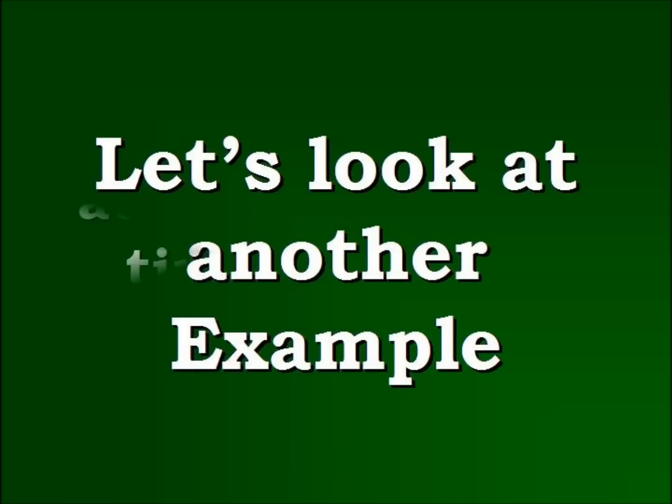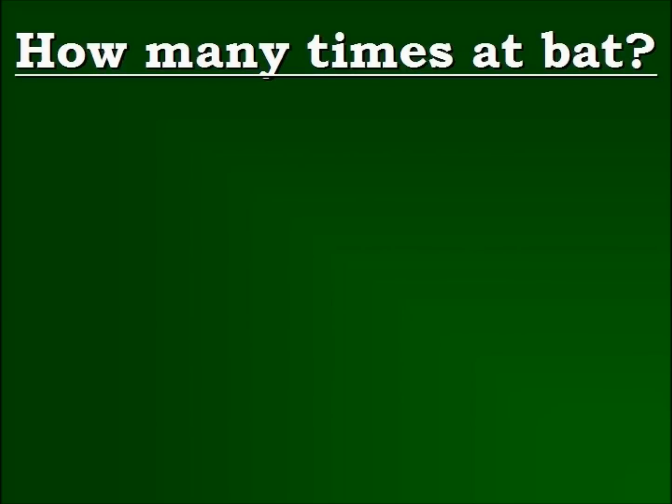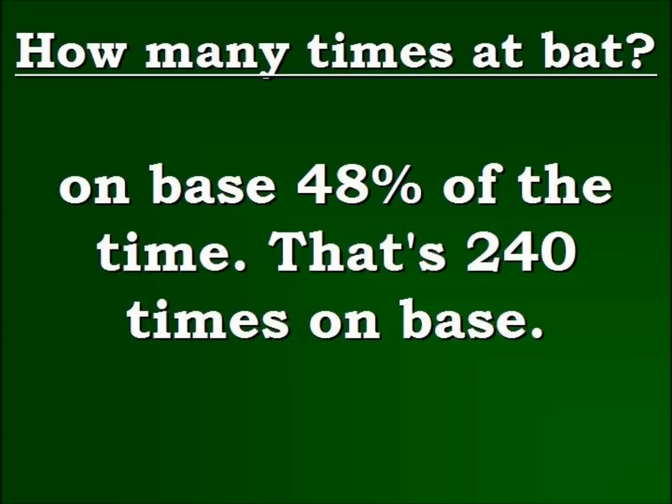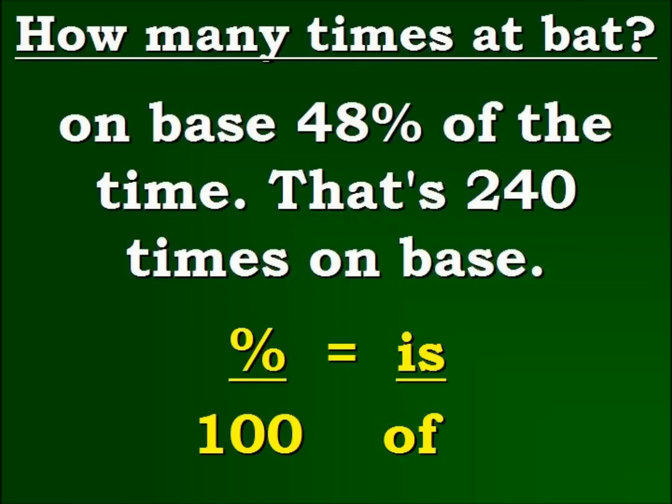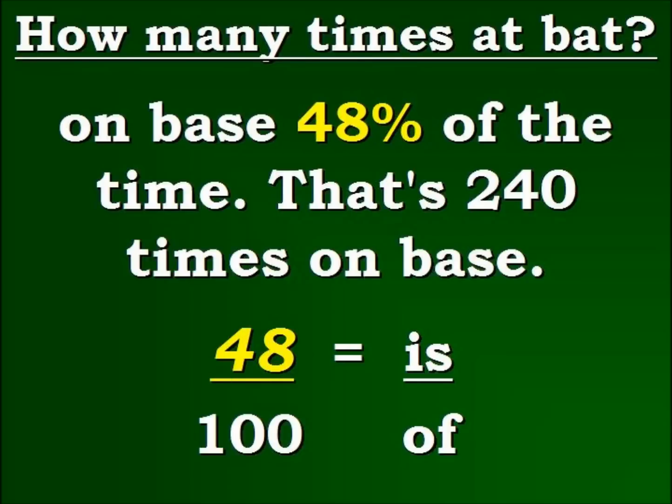Let's continue. Now with this word problem, we have a player that gets on base 48% of the time when at bat. That's 240 times on base. What is his total times at bat? So we want to know how many times he's at bat. So we're going to begin again with our formula. And we're going to plug in the percent, because that's the easiest part. So we understand that he was on base 48% of the time. So we're going to plug that in.